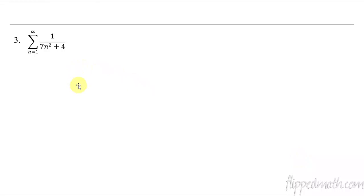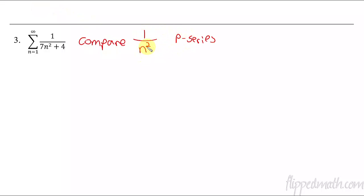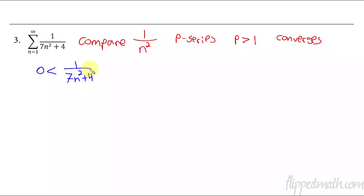Now let's do one more example of the comparison test — one that's not exponential. It looks kind of similar to this, so I could compare it to 1 over 7n², but I don't even have to include the 7. I could just say 1 over n², since the 7 won't really make much difference when you're talking about going off to infinity. This is a p-series, and the p is greater than 1 — it's 2 — so therefore this converges. So now let's compare them. We've got more stuff going on in the denominator, which means the whole fraction is smaller, so it's less than or equal to 1 over n². Since 1 over n² converges, this one also converges.